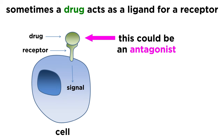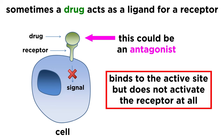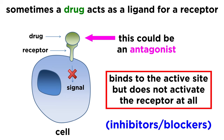Or a drug could be an antagonist for this receptor, meaning that it binds to the active site but does not activate the receptor, thereby locking it in an inactive state. We can call these inhibitors, or sometimes blockers.